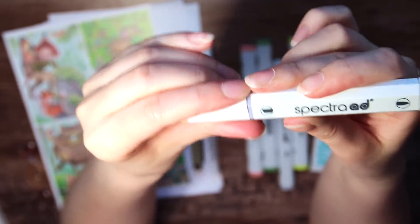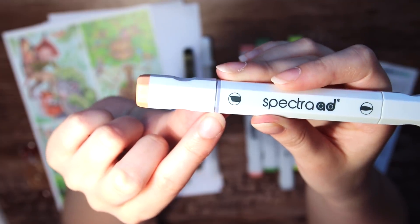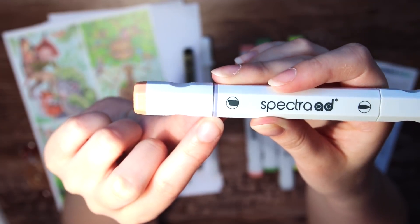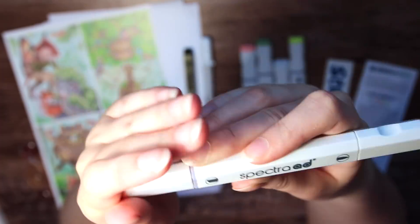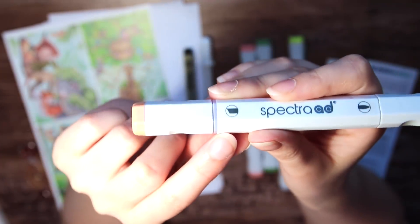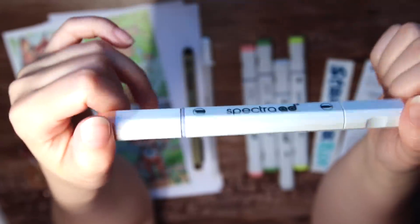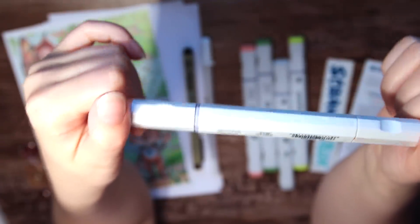Also, this is super confusing if you're used to Copic markers, because Copics has the grey line marking the brush nib side of the marker. But here it is on the chisel nib side for some reason, and I'm gonna use the wrong side a lot, I'm sure of it.